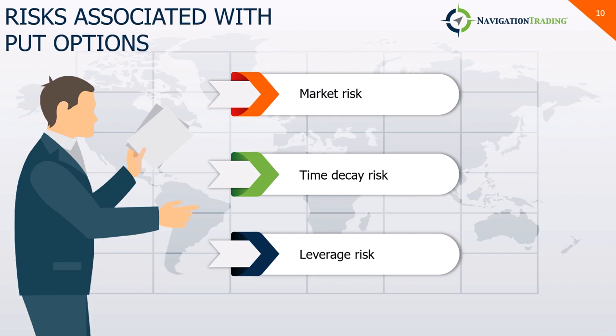What are the risks associated with put options? Number one, market risk: the value of the put option moves depending on the stock price movement. If the stock doesn't move as expected, your put option may not be profitable. There's also time decay risk — options lose value over time, and that happens especially fast as the dates get closer to expiration. And there's leverage risk: the leverage you gain with options can increase both potential gains and losses, so be cautious, as higher leverage can mean bigger losses too.